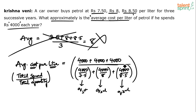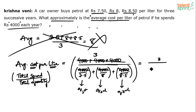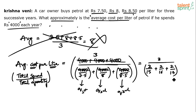Simplify by taking 4000 common from numerator and denominator. The 4000 cancels, leaving 3 divided by (1/7.5 + 1/8 + 1/8.5). Converting: 1/7.5 = 2/15, 1/8 = 2/16, and 1/8.5 = 2/17, giving all integer values. Then find the LCM and simplify to get the final answer.